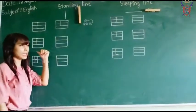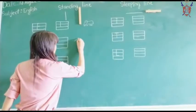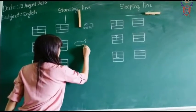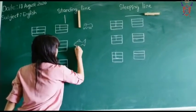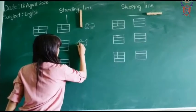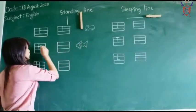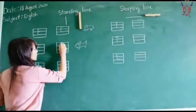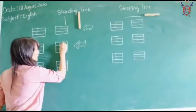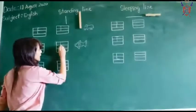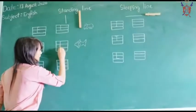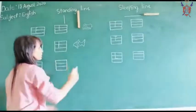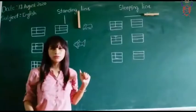Next letter is F. F for fish. See how we will write letter F. First you have to draw a standing line, then draw a sleeping line, again one more sleeping line you have to draw. F for fish. Fish lives in water.